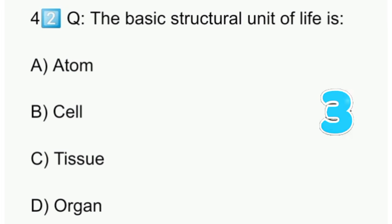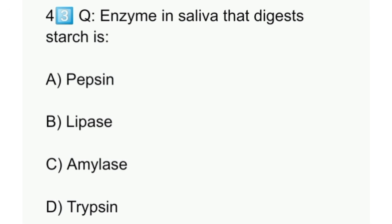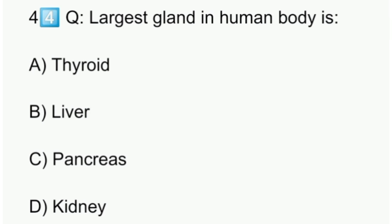Forty-three: Enzyme in saliva that digests starch is. Forty-four: Largest gland in human body is.